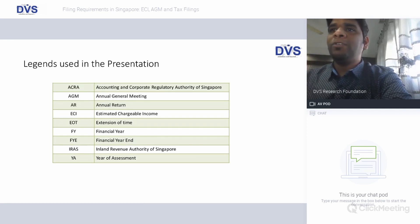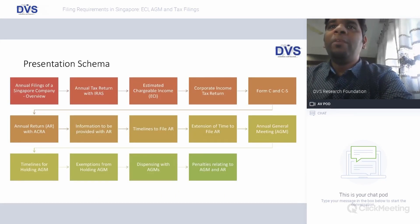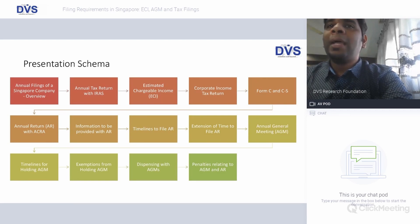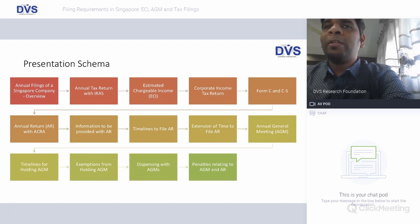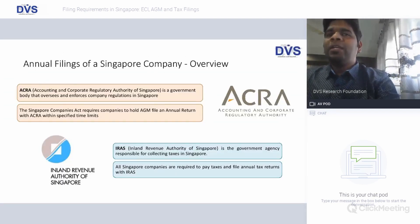These abbreviations are going to be quite frequently used in the rest of the presentation. Looking at the presentation schema, we're dividing it into two parts: first, we'll discuss the requirements for filing from the income tax perspective, which is the IRAS income tax regulatory authority of Singapore, and then we move on to ACRA's accounting and corporate regulatory authority filing requirements.